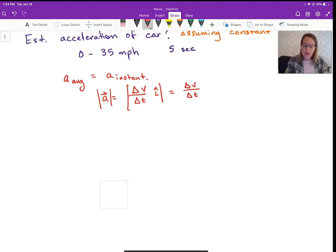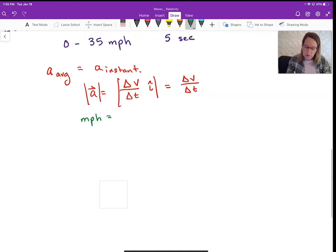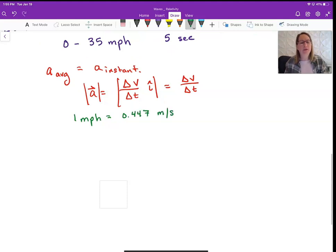And so all we need to do is really do a conversion. So Google can help you out with this, and you can find out that 1 mile per hour is equal to 0.447 meters per second. Just ask.